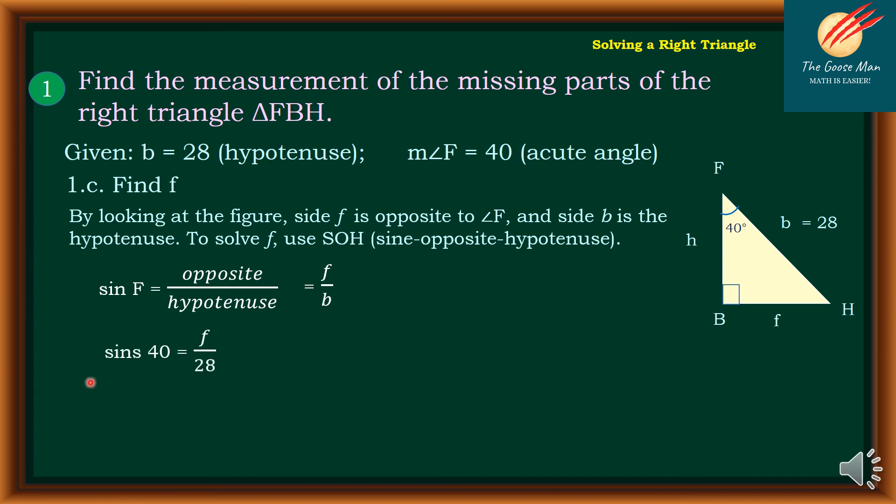Sine F equals, our angle F is equal to 40 degrees, f is unknown, divided by the value of b which is equal to 28.